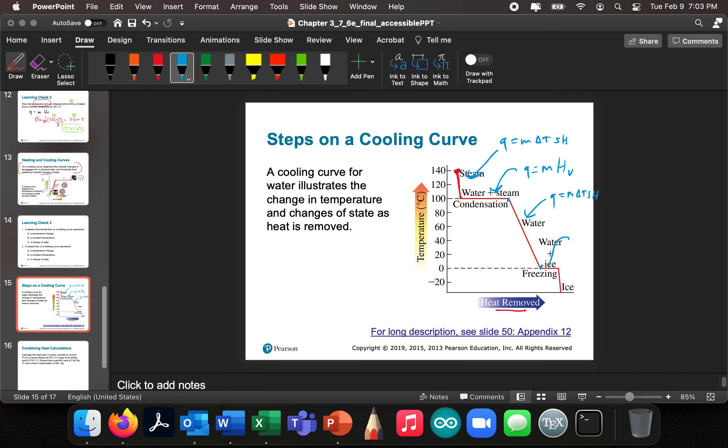Now, when we start to freeze, that's going to be Q equals M H of fusion. And this is going to be Q equals M delta T times the specific heat of ice. This is the specific heat of ice. This is the specific heat of water. And this is the specific heat of steam.